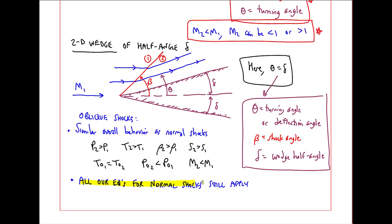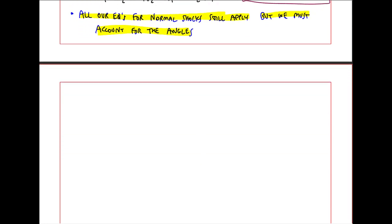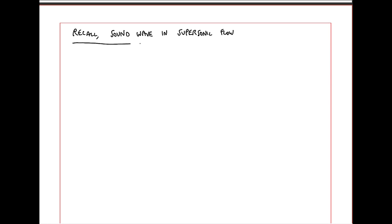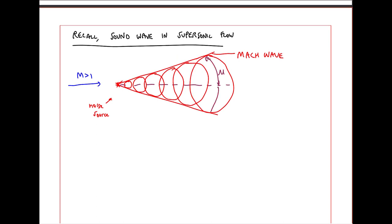It turns out that all our equations for normal shocks still apply. But we must account for the angles. Before I get into the equations, I just want to compare an oblique shock to a Mach wave. Recall we discussed the sound wave in supersonic flow, where we had a noise source in supersonic flow. But as soon as the sound is made, its sound waves travel downstream and are tangent to a line, which we called a Mach wave. So if you're standing here, you would never hear that sound. You hear the sound only if you're within this Mach wave region.